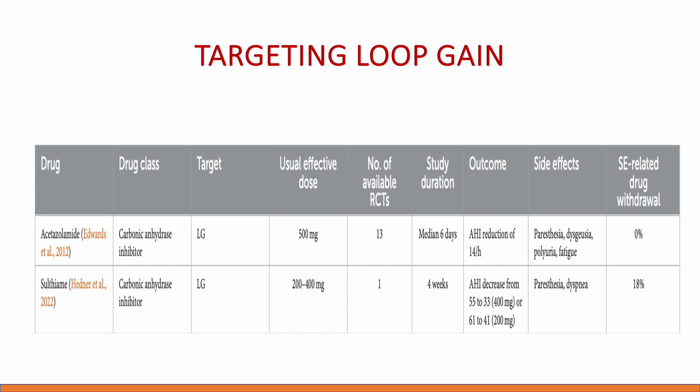Acetazolamide is a carbonic anhydrase inhibitor. What it does is induce metabolic acidosis, increasing the patient's baseline ventilation. When baseline ventilation increases, the partial pressure of CO2 changes — the patient flushes off CO2 more efficiently and loop gain is reduced. The newer drug Sulthiame is also on the horizon. Side effects of these drugs typically include polyuria, dysgeusia, paresthesias, and fatigue.